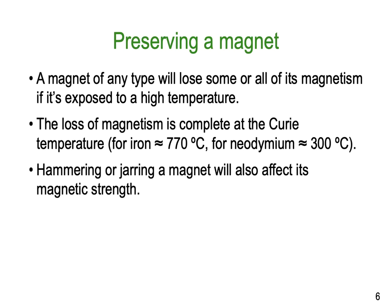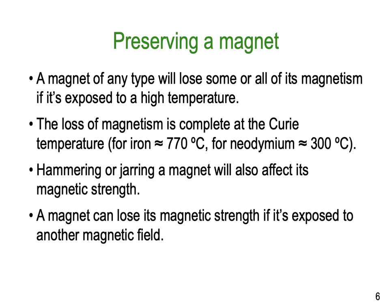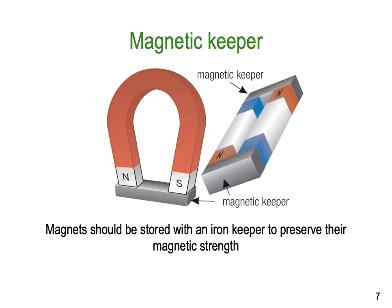Hammering or jarring a magnet will also affect its magnetic strength for the same reason — forcing the molecules and electrons to get jumbled up. That's actually how we used to magnetize screwdrivers to pick up screws, and to demagnetize them you just bang the end with a hammer. A magnet can also lose its strength if exposed to another magnetic field, as one field can reverse the effects of another. Magnetic keepers — a little soft iron placed across either face — keep the flux within the magnet so it lasts much longer.